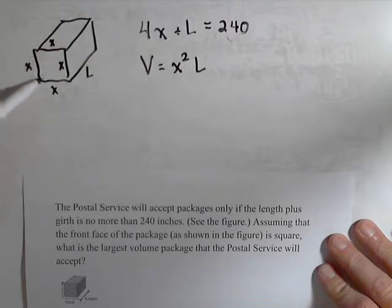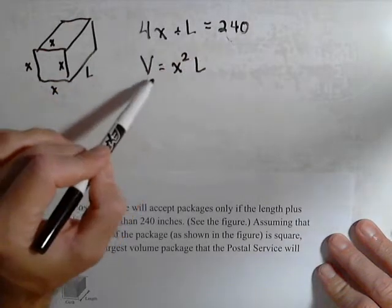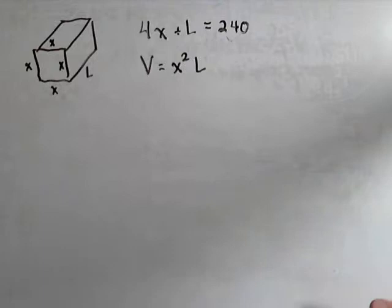Based on our drawing we're going to make this square. So x plus x plus x plus x, so 4x plus L is going to be 240. And the volume of this package will be x squared times L.